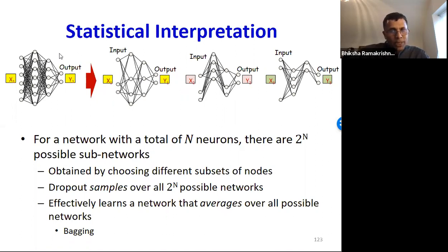However, the two raised to n networks are not all independent, but share parameters. And the final network we learn effectively averages over all two raised to n possible networks. So we're getting the benefits of bagging.